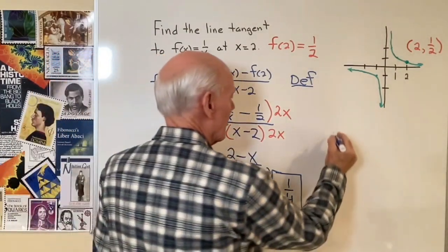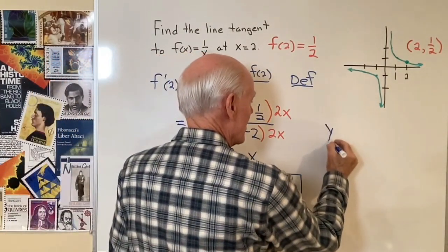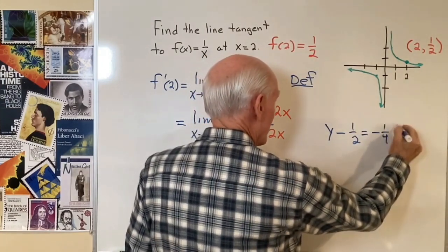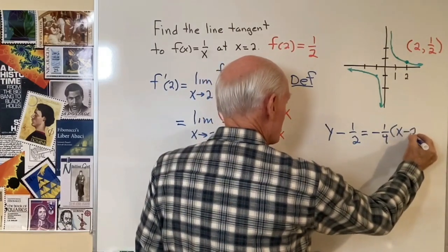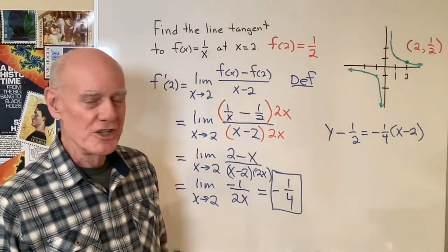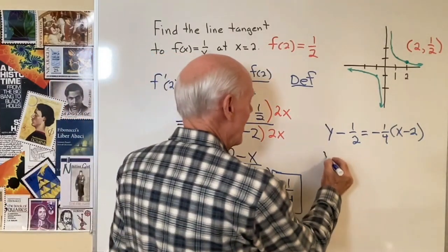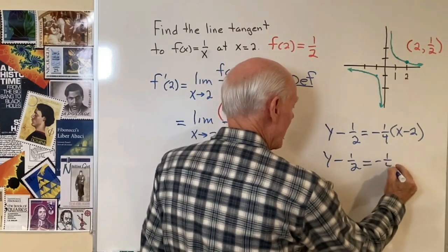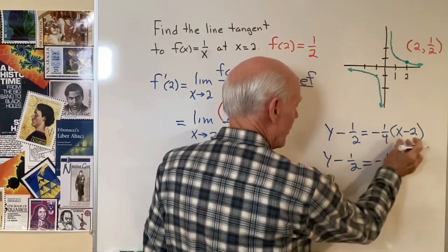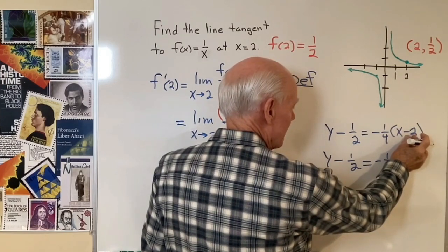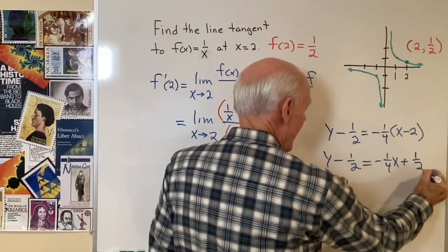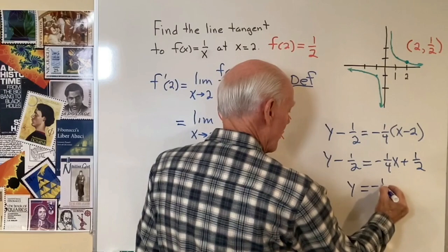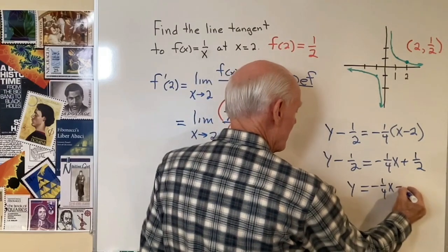So that's m, that's my slope. So the equation of the line tangent is y minus y1 equals m, negative 1 fourth, times x minus x1, which is 2. So there's the equation of the line tangent. All I have to do is simplify: y minus 1 half equals negative 1 fourth times x, plus negative 1 fourth times negative 2 is going to be positive 1 half. Then I'll add 1 half to both sides and I'll get y equals negative 1 fourth x plus 1.